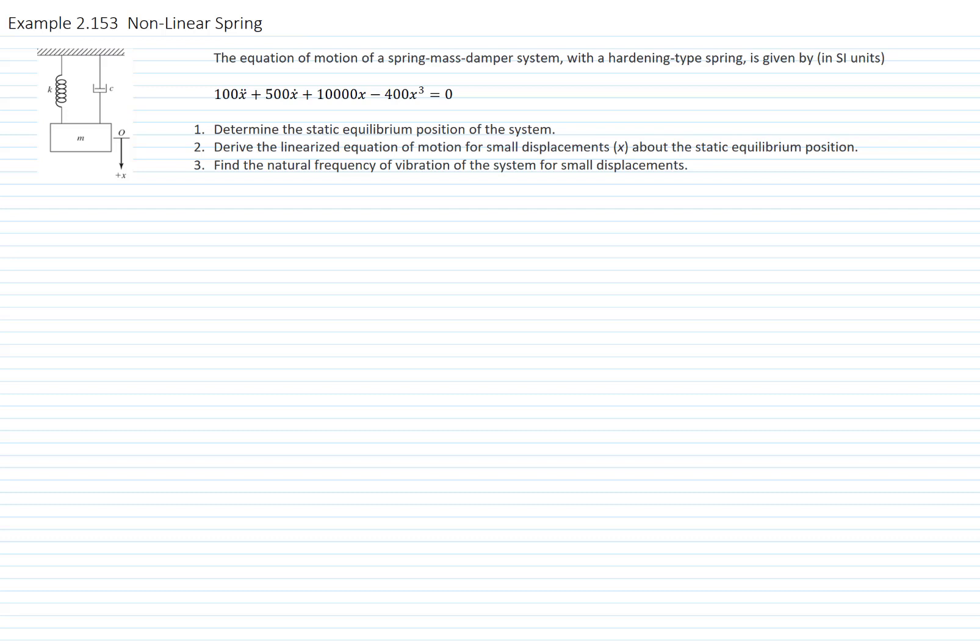The equation is given by 100 times the acceleration plus 500 times the velocity plus 10,000x minus 400x cubed. The terms that are multiplied by x represent the spring force. We'd like to determine the static equilibrium position of the system, derive the linearized equation of motion for small displacements about the static equilibrium position, and find the natural frequency of vibration of the system for small displacements.